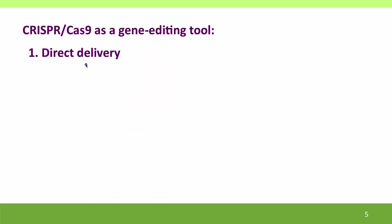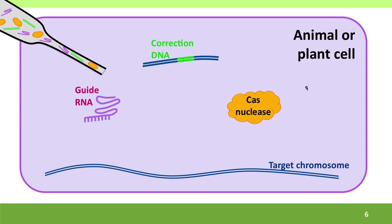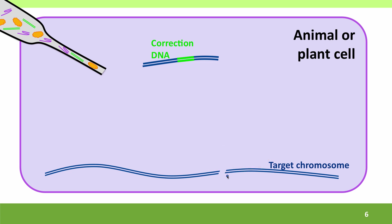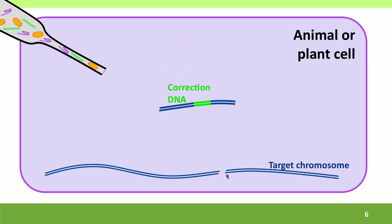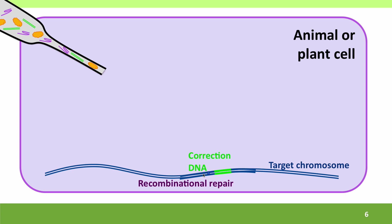This has been modified in several ways. The simplest is directly delivering the CRISPR components into a cell. We inject into a plant or animal cell a mixture of the guide RNA, the Cas9 nuclease, and a correction DNA. The guide RNA has been engineered to base pair right at the site we want to change. It recruits the Cas9 nuclease, which cuts the DNA, leaving a double-strand gap that will be lethal unless fixed. It's fixed by the correction DNA, which has flanking regions identical in sequence to the target chromosome and the new sequence at the site of the cut, allowing recombinational repair.